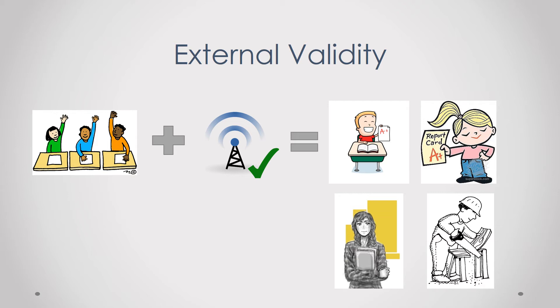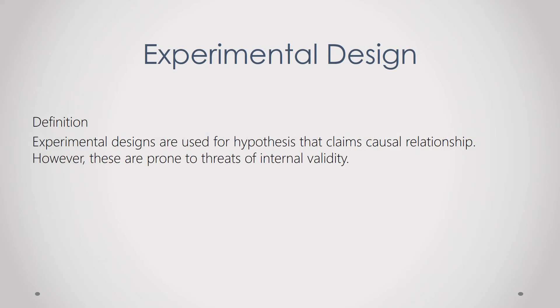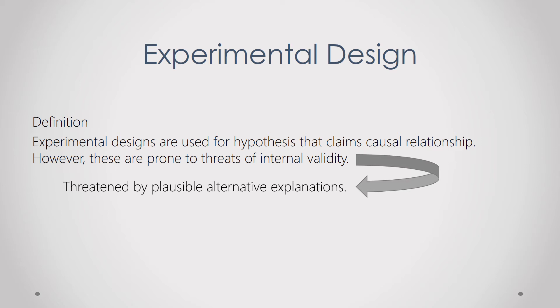External validity is helpful when you're trying to define the limits of your study. For example, I can say the limit of my study is only young male students and may or may not be applicable to female or older students. Going back to the definition: experimental designs are used for hypotheses that claim causal relationships, but they are prone to threats of internal validity — in other words, threatened by possible alternative explanations.